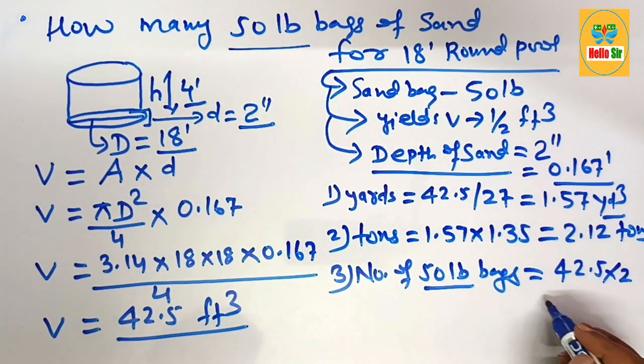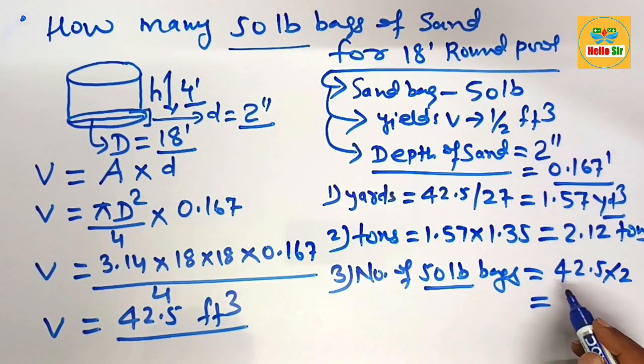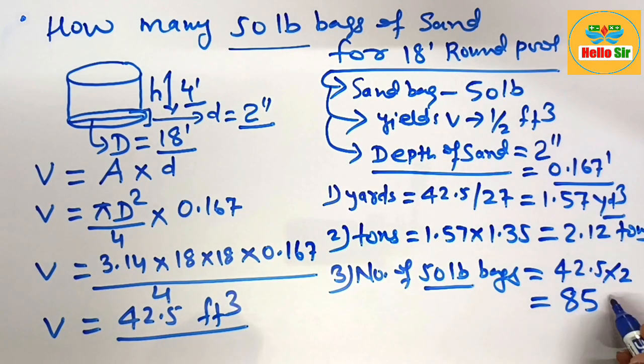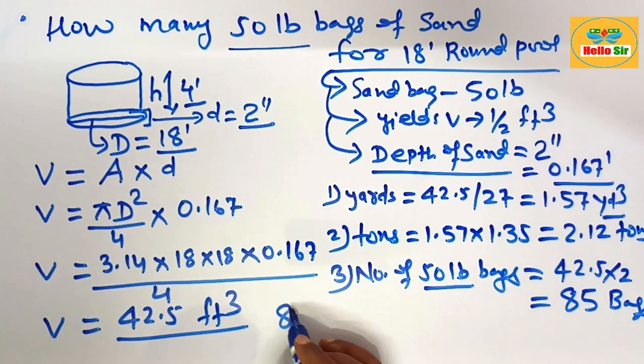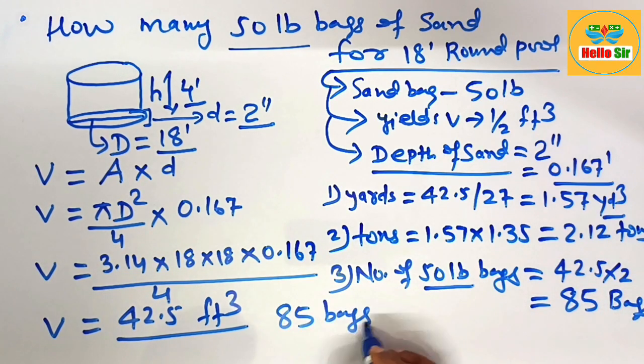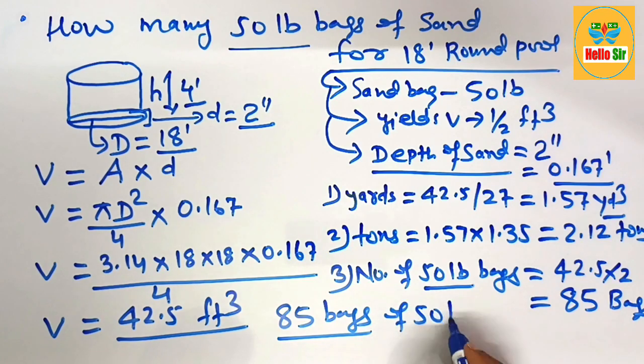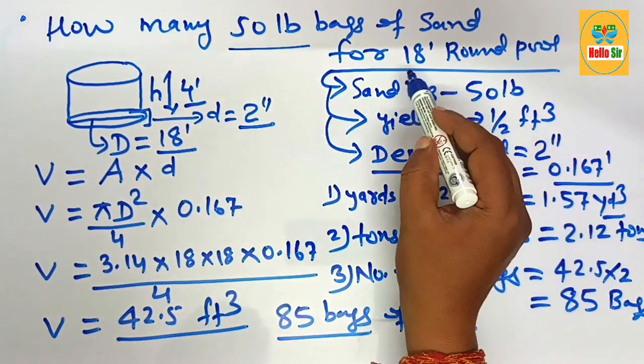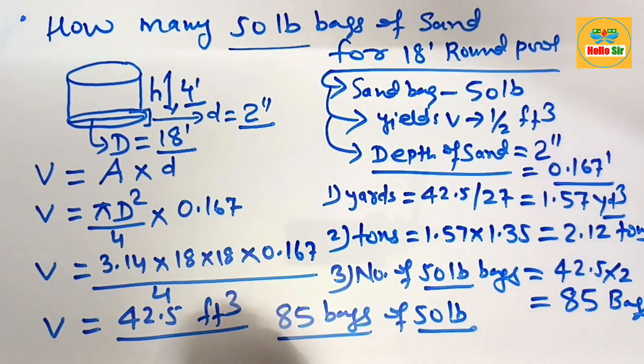This yields the number of 50-pound bags needed: 85 bags. It means you need 85 bags of 50 pounds for an 18-foot round pool. Thank you.